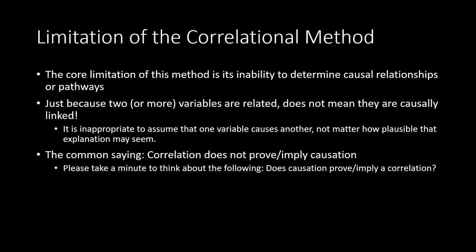The correlational method is also not without its limitations. The core limitation is its inability to determine causal relationships or pathways. Just because two variables are related or linked does not mean they are causally tied to one another. It is inappropriate to assume that one variable causes another, no matter how plausible that explanation might seem. There is a common saying that many of you have probably come across: correlation does not prove or imply causation.